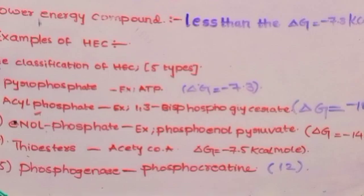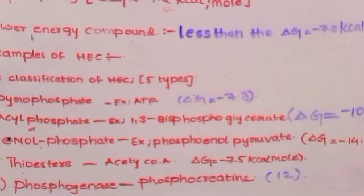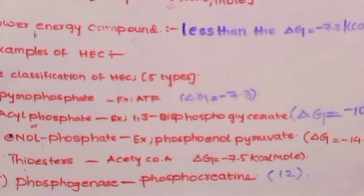And phosphagens. Example: phosphocreatine. Its energy is ΔG = -12 kilocalories per mole. Among these types, acyl phosphate generates higher energy than thioester.